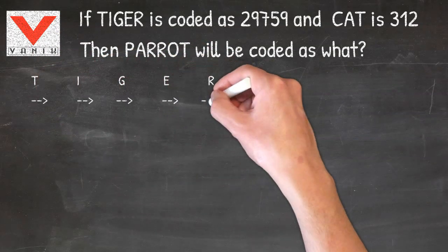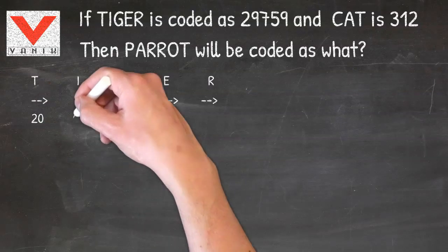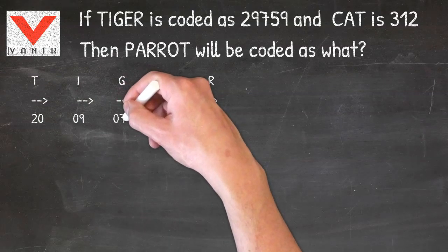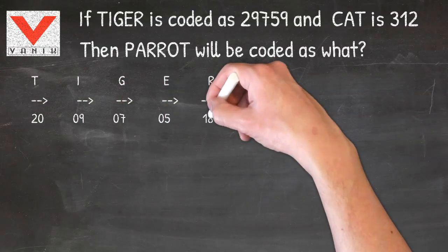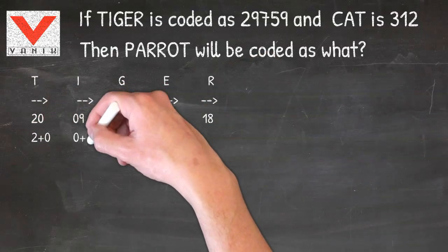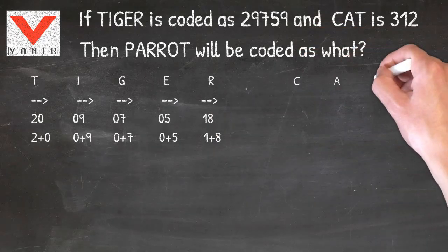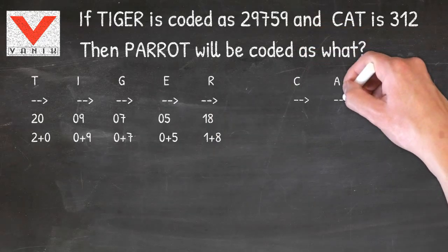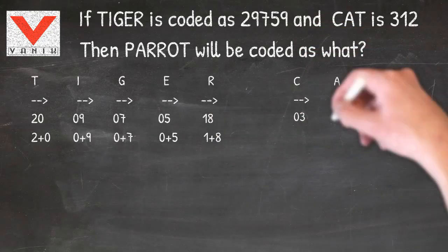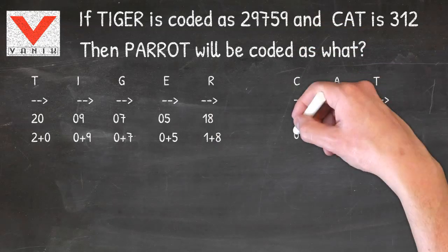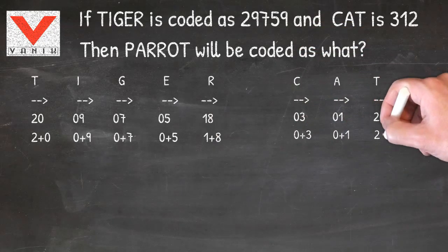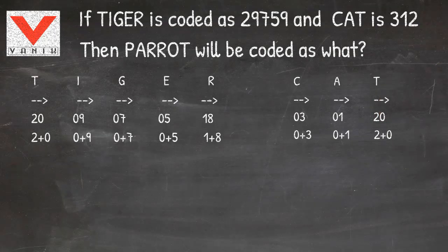You can see in tiger, T stands for 2 — it's the sum of digits of the position value of T from A to Z. Accordingly, all others are just the sum of the respective position values of all the letters.